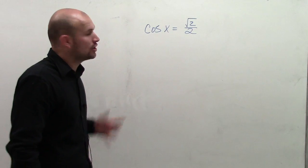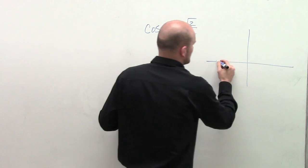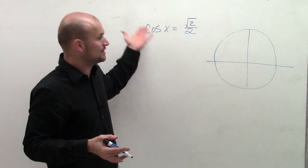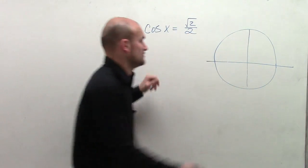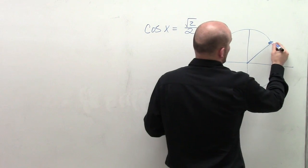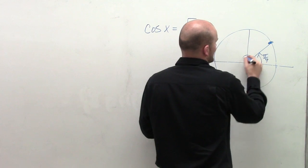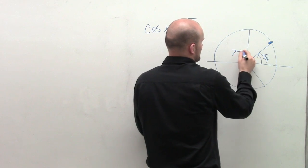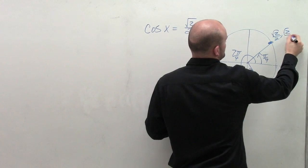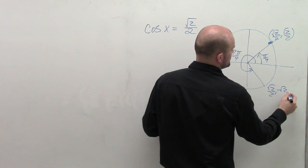Let's take a look at cosine of x equals the square root of 2 over 2. When we look at the interval, we use the unit circle to determine what angle, when we take the cosine of x, equals the square root of 2 over 2. That value occurs at pi over 4, where the point is (√2/2, √2/2), and at 7 pi over 4, where the point is (√2/2, -√2/2).